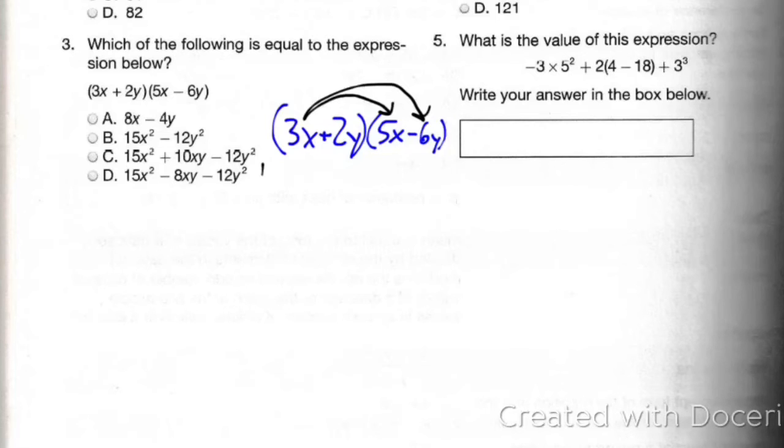3x times 5x is 15x squared, because you multiply the numbers together, which is 15, and you multiply your x's together, which is x squared. And 3x times negative 6y is negative 18, because 3 times negative 6 is negative 18, xy.